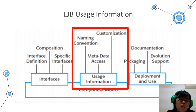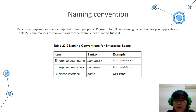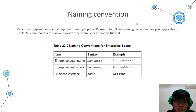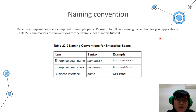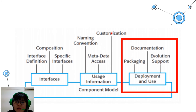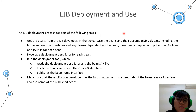The second element is usage information. For this, I am focusing on naming conventions, because naming conventions are important for enterprise beans — as enterprise beans are composed of multiple parts, it is useful to follow a naming convention for people deploying and building with EJB. Here is a table of naming conventions for enterprise beans. The last element is deployment and use.